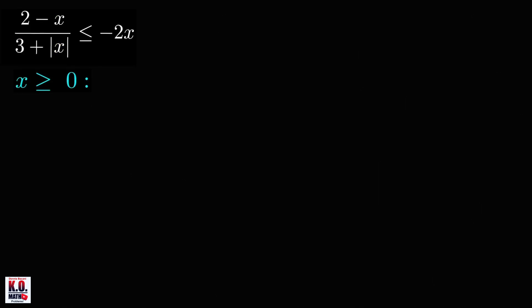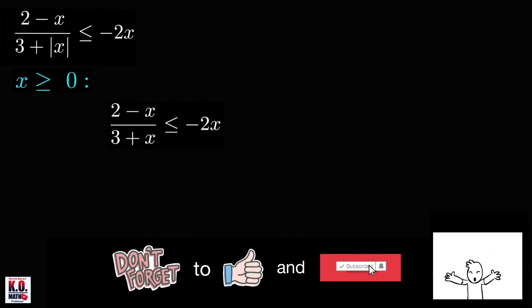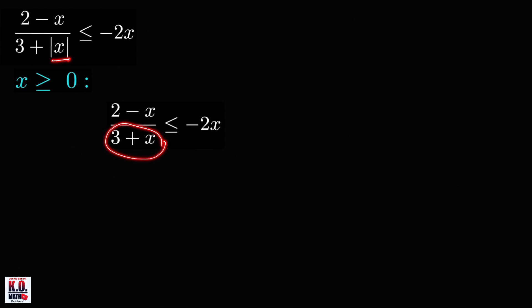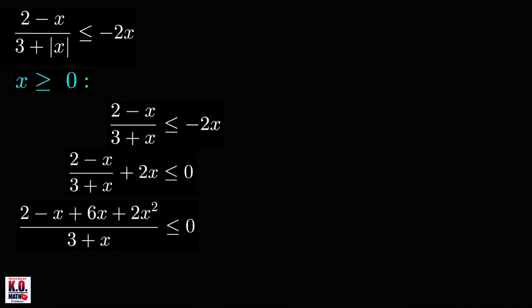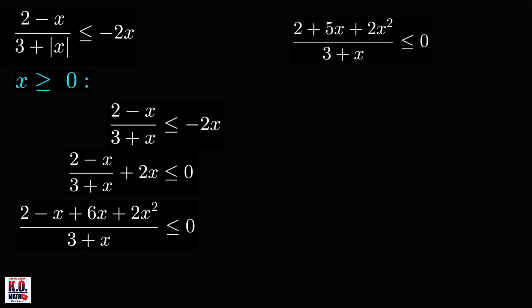For x greater than or equal to 0, we can write the denominator on the left-hand side as 3 plus x, so we can just ignore the absolute value here. And now we can move negative 2x to the left-hand side, and we'll get 2 minus x all over 3 plus x plus 2x, less than or equal to 0. Combining these two terms into a single fraction, we'll get 2 minus x plus 6x plus 2x squared, all over 3 plus x. And we can simplify the numerator to 2 plus 5x plus 2x squared.